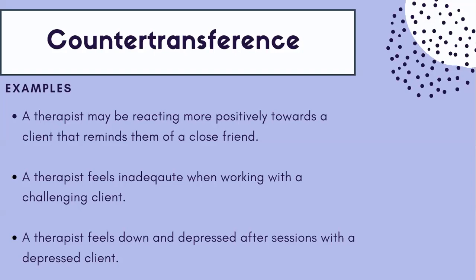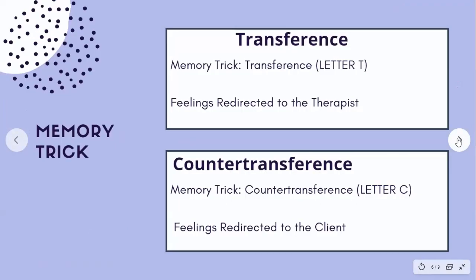Now I'm going to give you a little memory trick — this is how I learned the difference between transference and countertransference. For transference, the memory trick is that transference starts with the letter T, and I remember it as feelings redirected to the therapist: Transference to the Therapist. For countertransference, it starts with the letter C, and the memory trick is feelings redirected to the client: Countertransference to the Client.